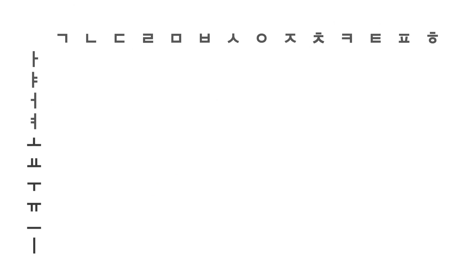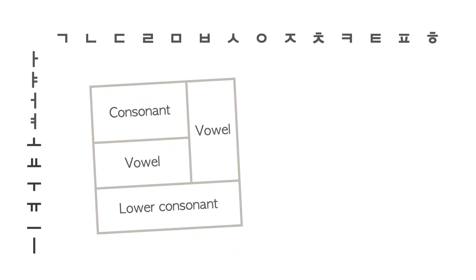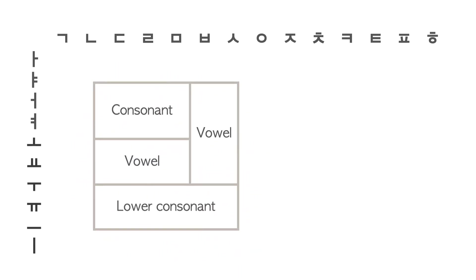There are 14 consonants and 10 basic vowels in the Korean alphabet — these are all we need to learn the Korean writing system. This block is a placeholder that shows where to put consonants and vowels when writing in Korean. Each square box represents one syllable.